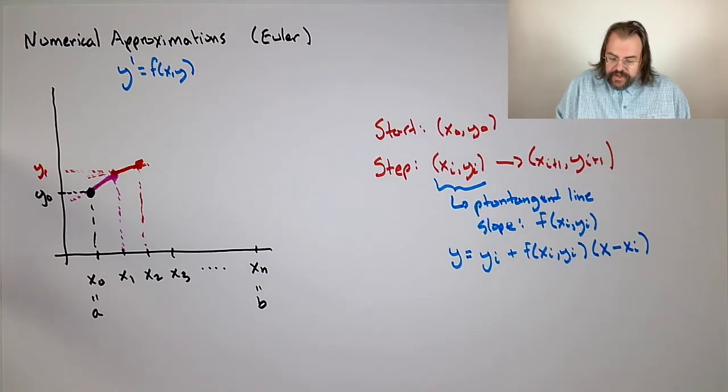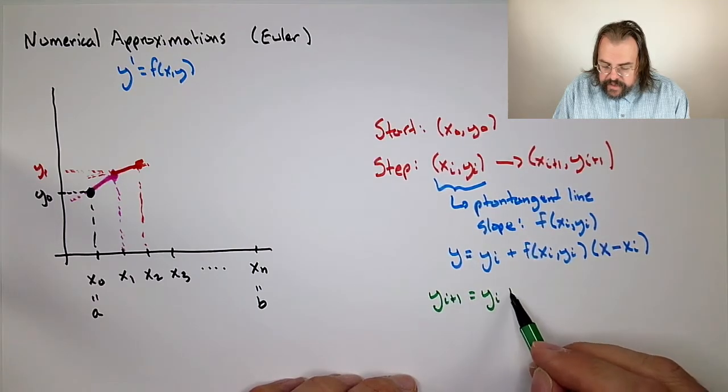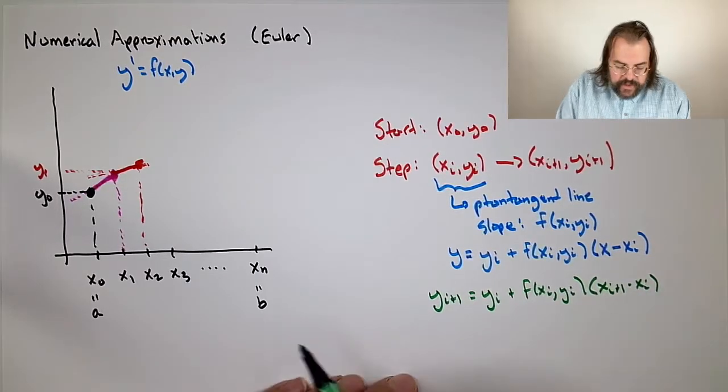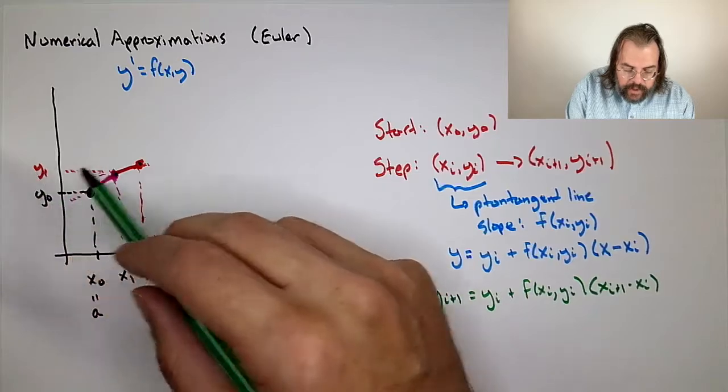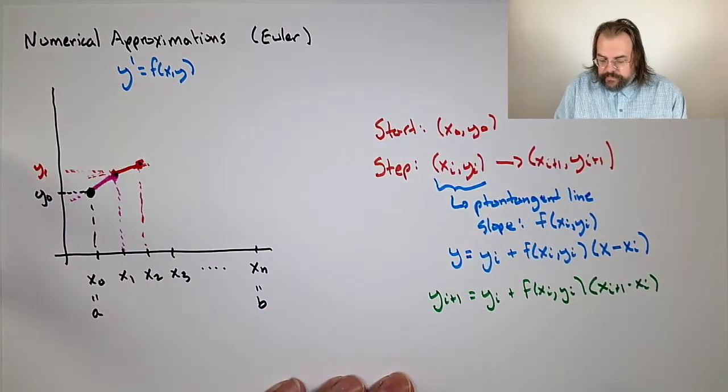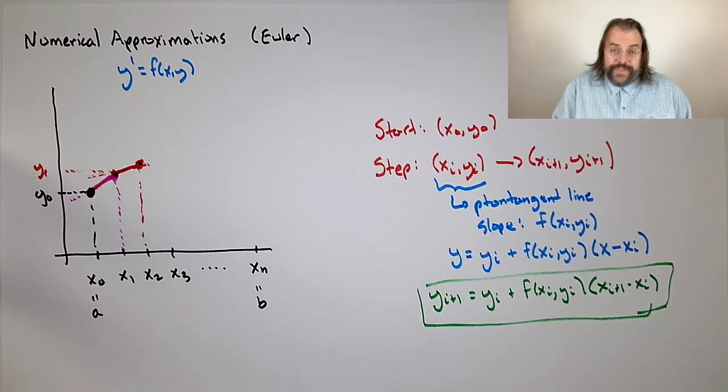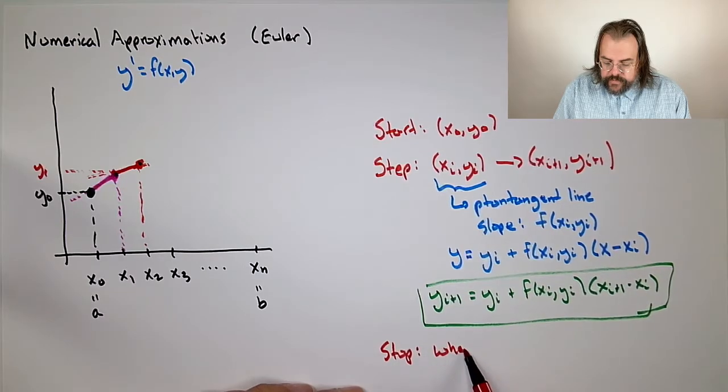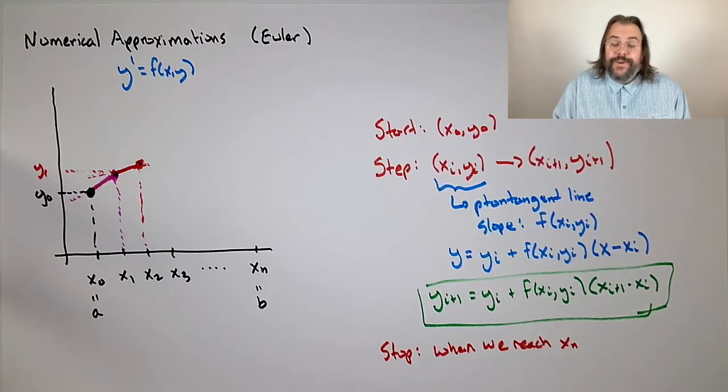In particular, we say our yᵢ₊₁ = yᵢ + f(xᵢ, yᵢ) times (xᵢ₊₁ - xᵢ). In other words, I have my point and my slope, and I follow it, and to get my next y coordinate, I go to my next x coordinate. That's the key step. And where do we stop? We stop when we've reached our xₙ, when we've reached as far as we want to go. That's it. That's the whole idea.